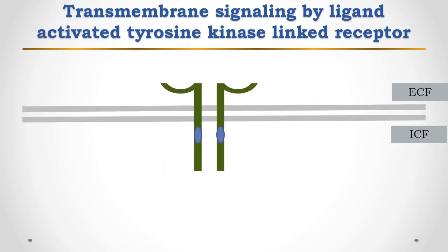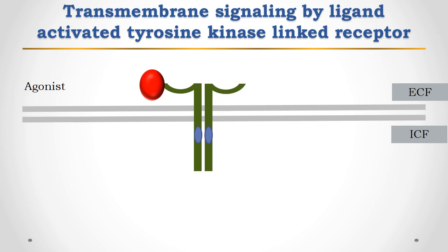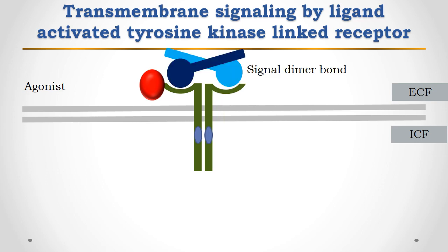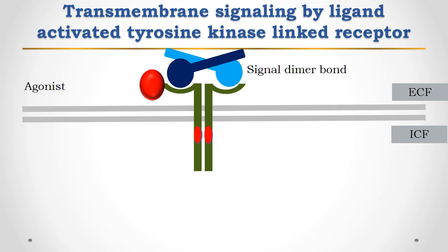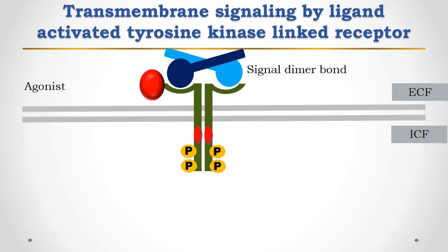Let's see how the tyrosine kinase-linked receptor works. The agonist binding to the extracellular domain of this receptor produces a conformational change that results in dimerization and activation of the intracellular enzyme domain. The kinase activity present at the intracellular site is activated. As a result, the receptor is autophosphorylated, thus activating receptor tyrosine kinase activity towards intracellular signaling proteins.